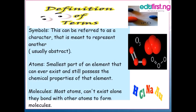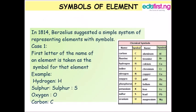other atoms to form what is known as a molecule. Then we talk about the symbols of elements. How come elements have symbols? Today we are going to find out. In 1814, Berzelius suggested a simple system of representing elements with symbols in three cases.